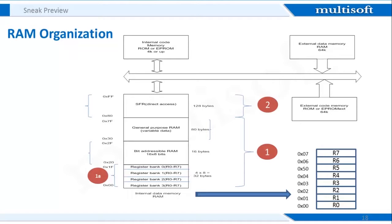Register bank 0 is the default when 8051 is powered up. Addresses from 0x20 to 0x2F — 16 bytes — are reserved as bit addressable, called the bit-addressable part of RAM, where bit operations can be performed through bit-addressable instructions. The next 80 byte locations are called the scratch pad, where intermediate calculations can be performed.